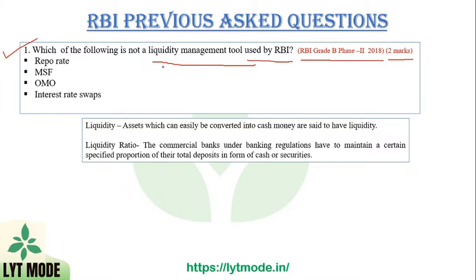Liquidity refers to assets which can be easily converted into cash. The liquidity ratio includes tools like CRR, SLR, and repo rate — the different liquidity ratios that commercial banks must maintain under banking regulations, as a specified portion of their total deposits in the form of cash, gold, or securities.